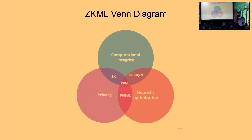If you combine ML with computational integrity, you get validity ML — you only get proof that some computation happened correctly, but you're not hiding any of the computational steps. And if you combine privacy, heuristic optimization, and computational integrity, that's what we'd call zero-knowledge machine learning. One important note: the difference between privacy in ZK versus fully homomorphic encryption — FHE allows you to have private data, whereas in zero-knowledge ML the data is not private. It's always available to the prover, but the prover can prove computations happened without revealing them.